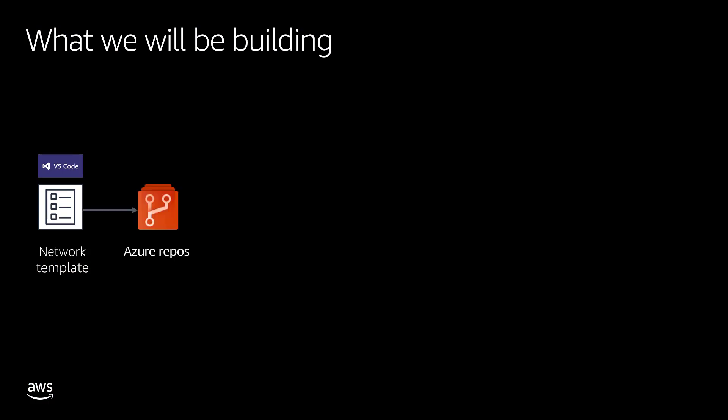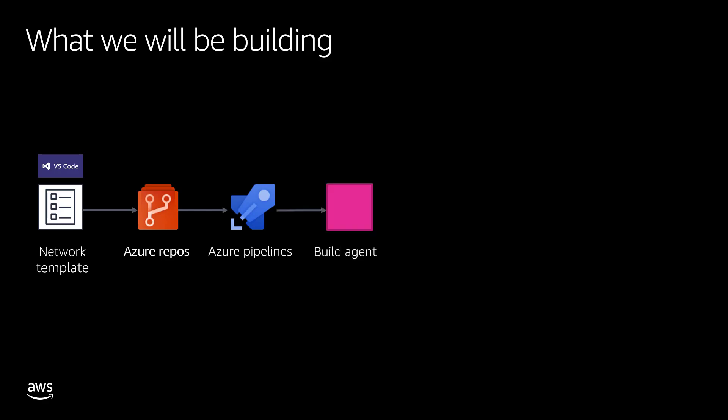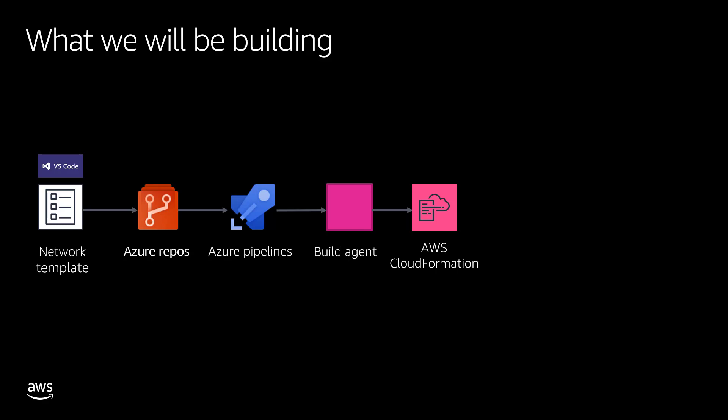So what we are going to build today: we are going to use the same network template, put it into an Azure repository, kickstart an Azure pipeline using a build agent, and invoke the AWS CloudFormation API — but instead of using an extension or plugin we are going to do that with PowerShell. This invocation will create a simple virtual private cloud and a subnet. Let's see how we can do this integration.